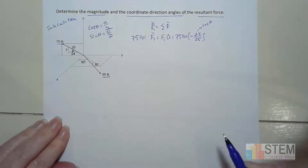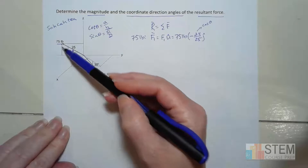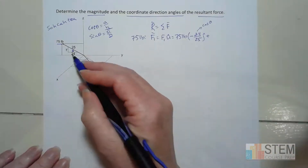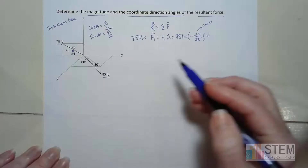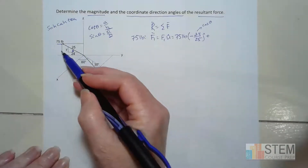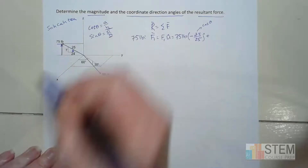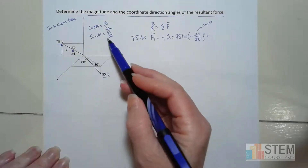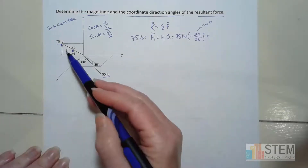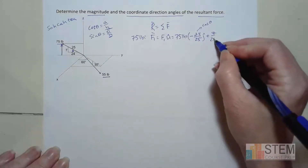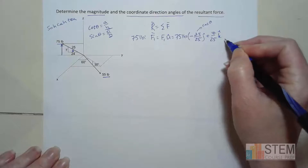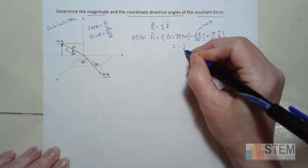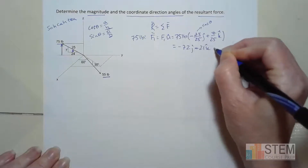Now the K component, or Z component — that should be positive because it's pointing in the up direction. If I had this angle theta, I would need the opposite side. So I use opposite over hypotenuse: opposite is 7, hypotenuse is 25, giving 7 over 25 for the K component. Multiplying through: F1 equals negative 72J plus 21K pounds.